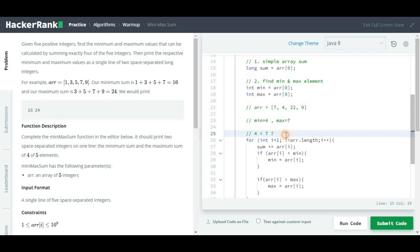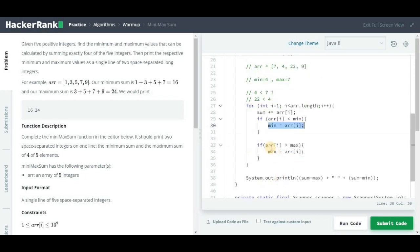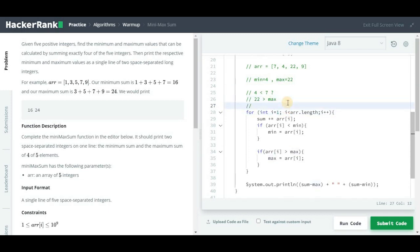It will again check if 4 is greater than 7, which is false, so it will not go there. Now in the second iteration we have 22. Is 22 less than minimum, which is now 4? No, it's not true, so it will not do the assignment. But it will check if arr[i] which is 22 is greater than our max which is 7. So yes it is, so now our max will be 22.